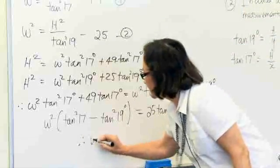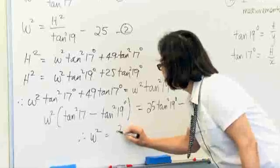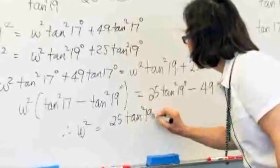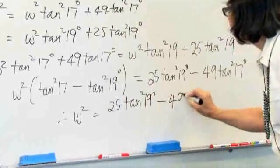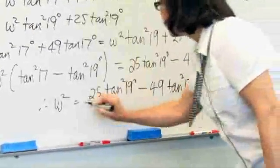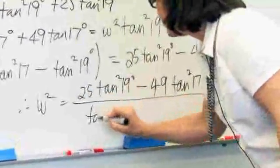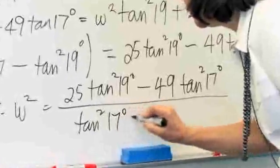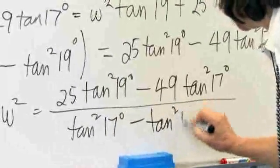Therefore, W squared is 25 tan squared 19, take away 49 tan squared 17, all over tan squared 17, minus tan squared 19.